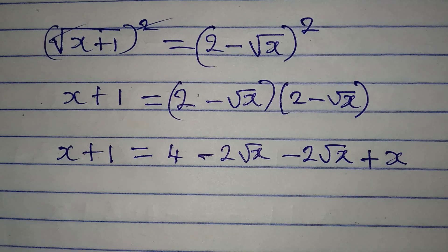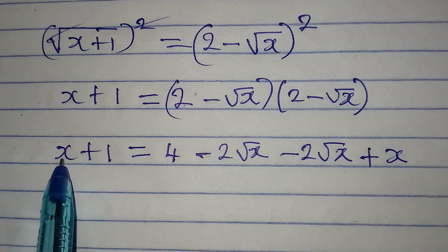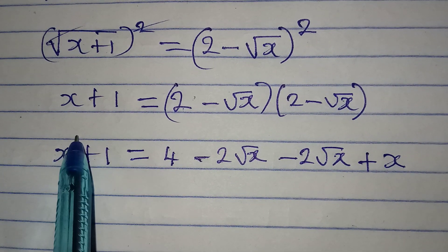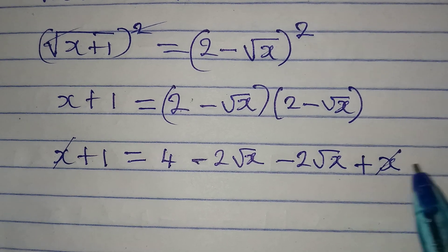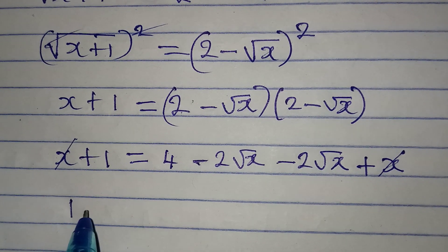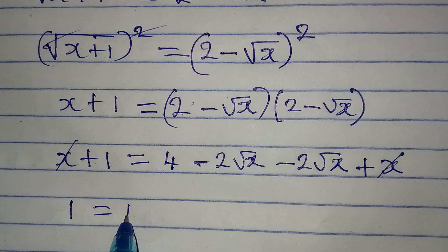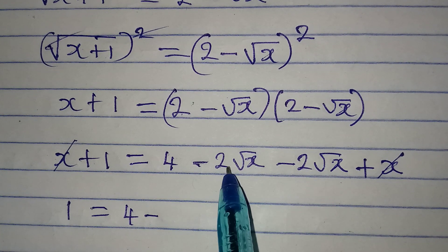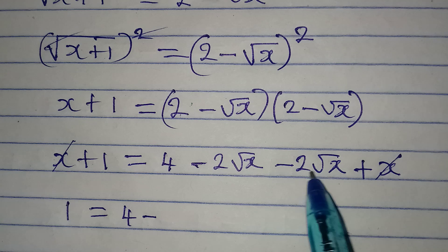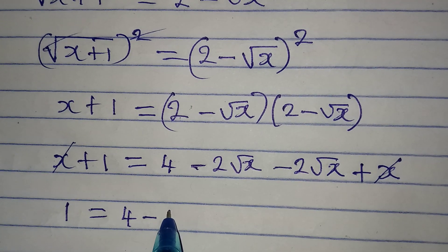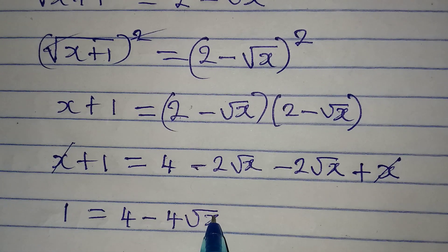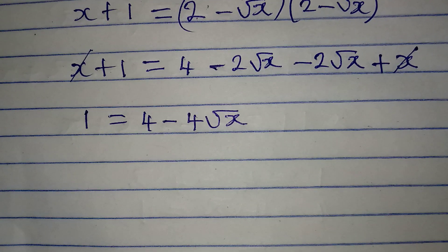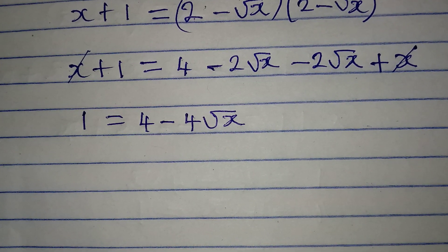Now we have positive x on both sides, so they cancel each other. We are left with 1 equal to 4 minus, and we add the middle terms, getting minus 4 root x.